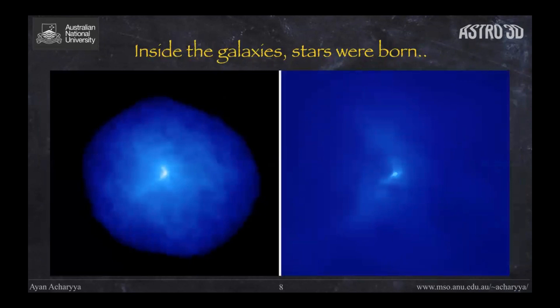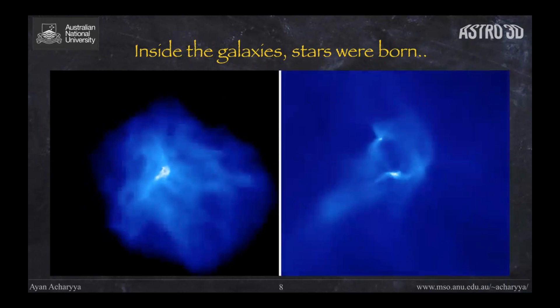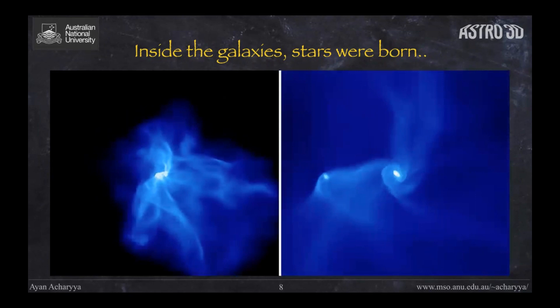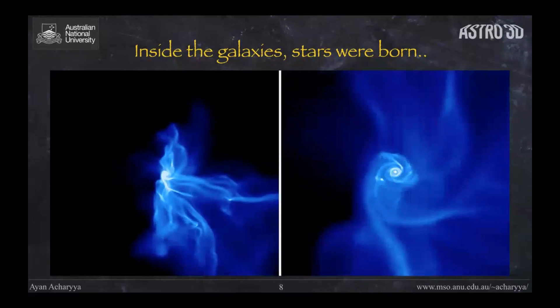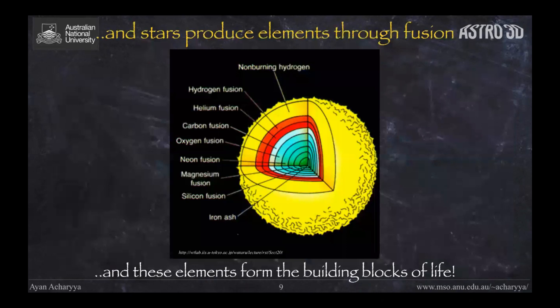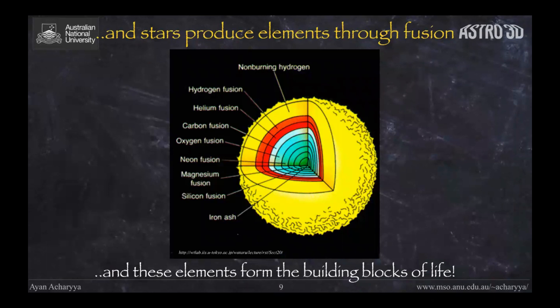In these last simulations we see how gas clouds within individual galaxies come together due to gravitational attraction, collapse, and form stars — those bright spots in the simulation. Once a star forms, nuclear fusion takes place inside it, producing elements like oxygen, carbon, and nitrogen. Some elements are produced by nuclear fusion in the star's core, while others are produced in the extreme heat and pressure generated when the star explodes as a supernova.